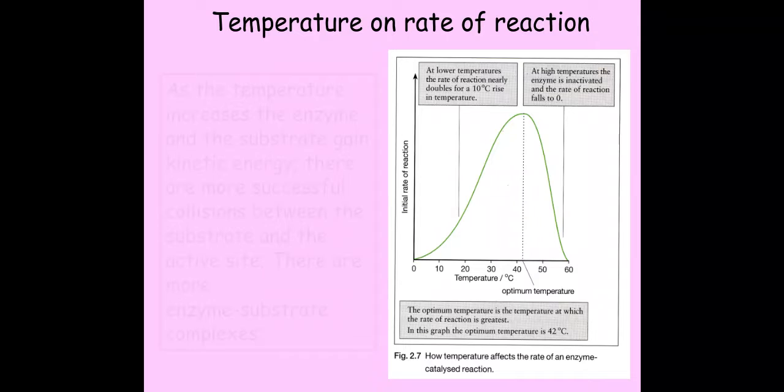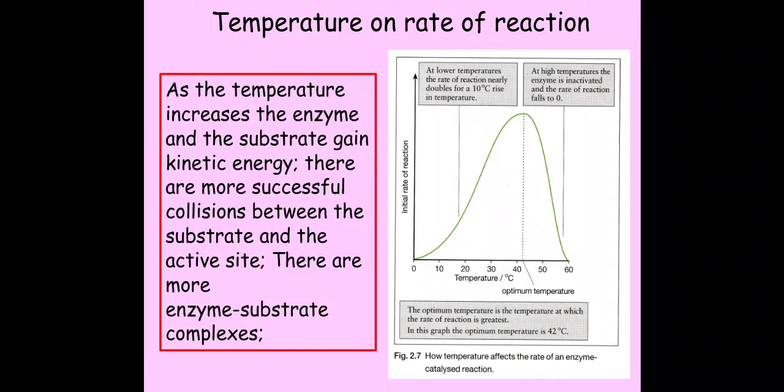But basically what happens here is that as the temperature increases both the substrate and the enzyme gain kinetic energy. So if they gain kinetic energy they're going to be moving around more. This means they're going to get more successful collisions between the substrate and the active site. It's really important to hear you say active site not enzyme. So because I have more successful collisions between my substrate and my active site I get more enzyme-substrate complexes. Now this occurs up until my optimum temperature here.